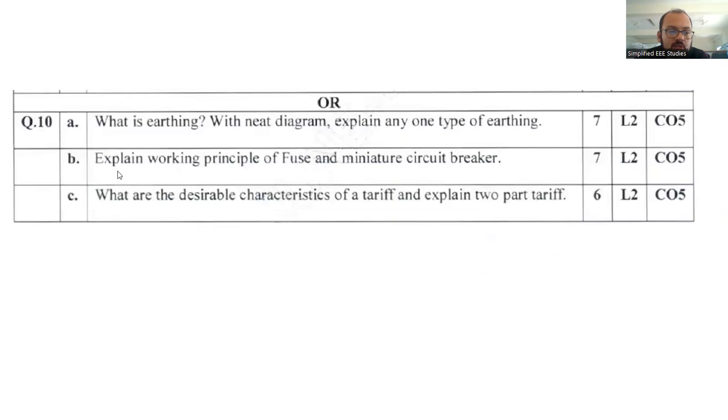Question 10a: What is earthing? A non-current carrying metal part is connected to the ground to protect the person. It's personal safety. Explain one type of earthing - there are two types: plate earthing and pipe earthing. Explain anyone with a neat diagram.